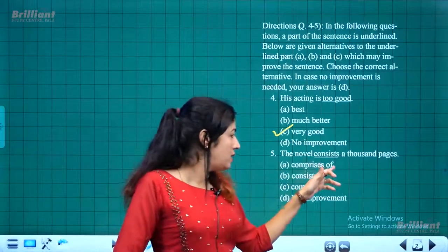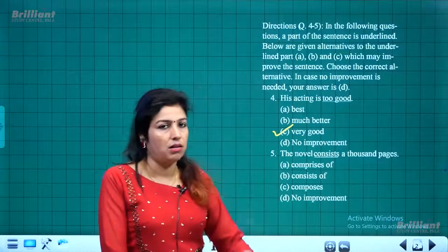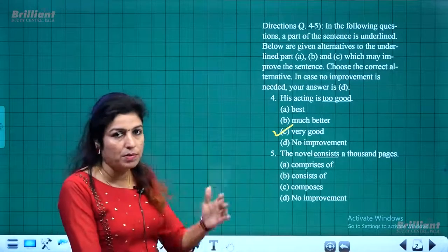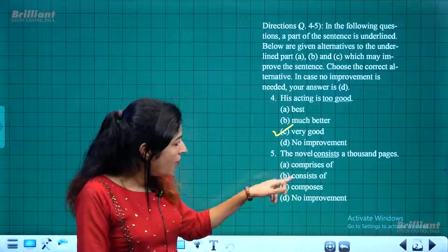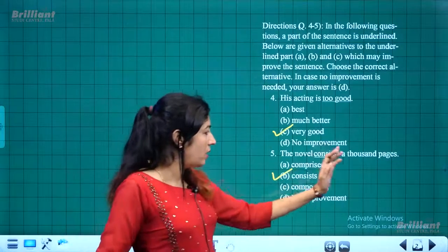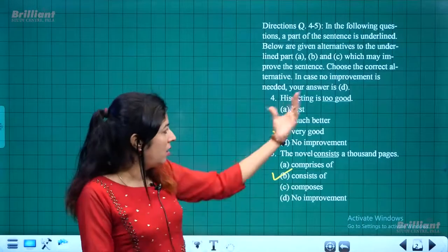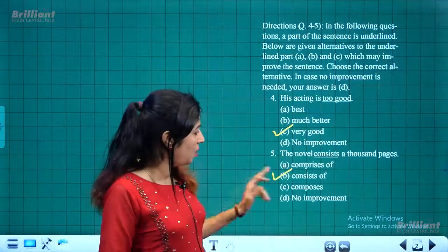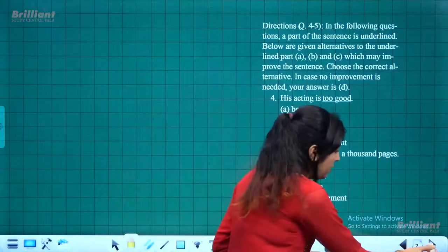The fifth question: 'The novel consists a thousand pages.' A preposition is missing. The correct form is 'The novel consists of a thousand pages.' So the correct substitute is 'consists of.' For both sentences we need substitutes: 'very good' for the first and 'consists of' for the second.